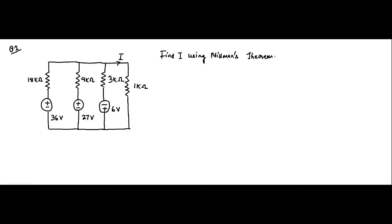Here we are with the second question related to Millman's theorem. We have a circuit consisting of voltage sources along with resistors connected in a parallel arrangement. We have to again find out this current I. We will solve it directly using Millman's theorem. Whenever such an arrangement is present, we can determine the Thevenin equivalent — replacing it with VTH and RTH — and then there is a 1 kilo ohm resistance.